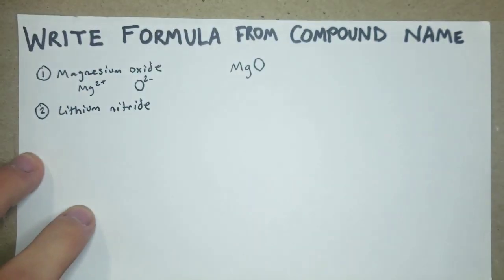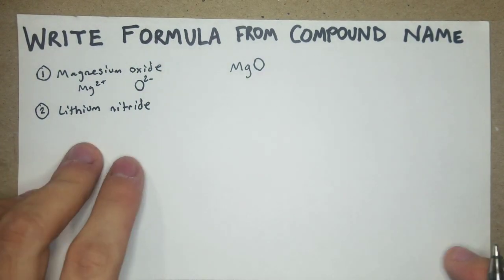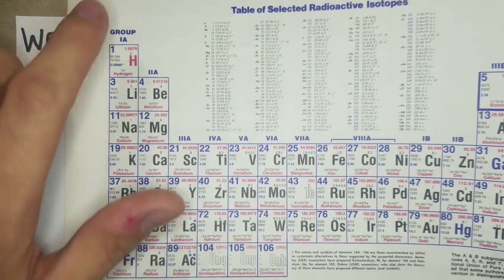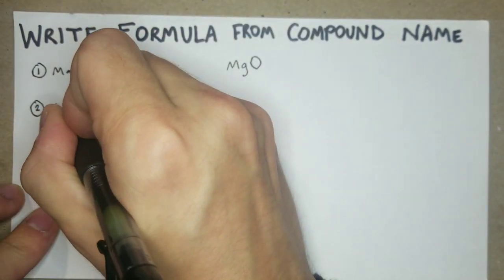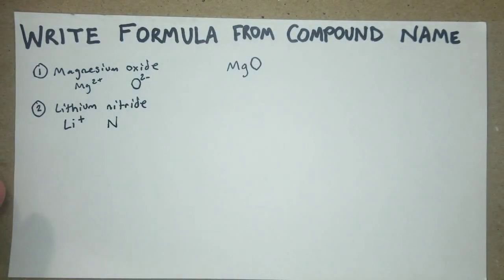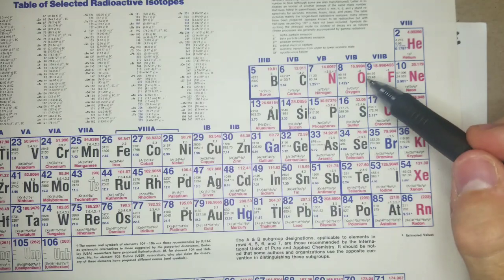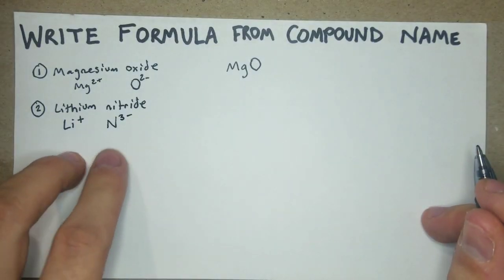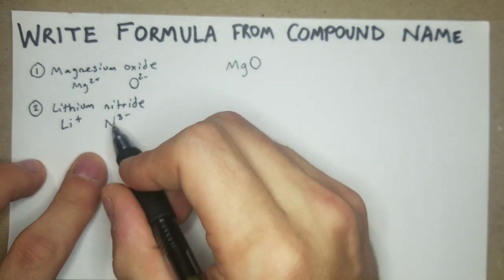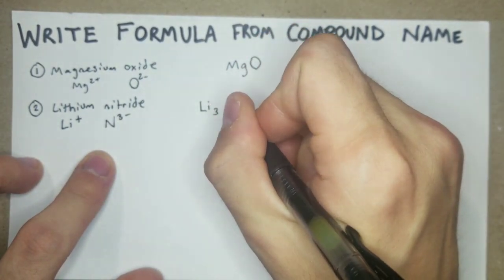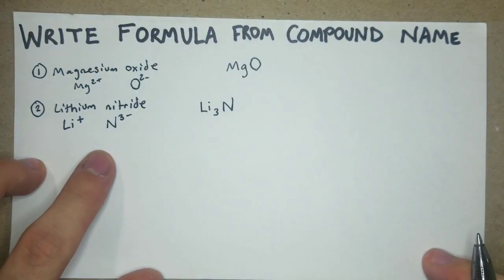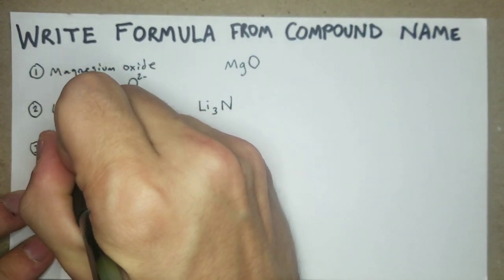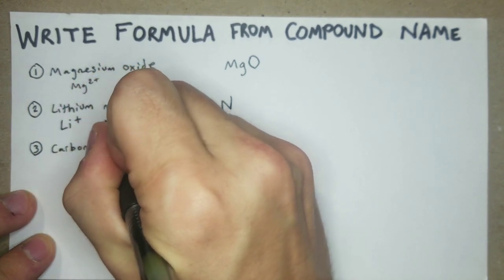Number two: lithium nitride. Again, it's just two different elements, so let's check the charges for any subscripts. Lithium is 1+, and nitrogen is in the third column from the end, so it's 3-. In order to reach a neutral charge, we need three lithiums to one nitrogen, giving us Li3N.